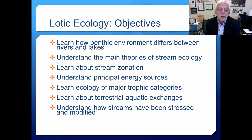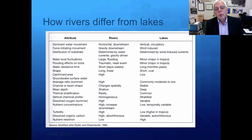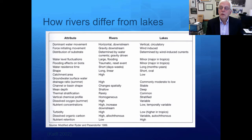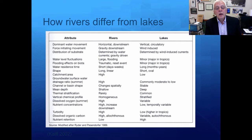Think about terrestrial-aquatic exchanges and understand how streams have been stressed and modified over time. Rivers differ from lakes in very important ways. This is a table from the KALF textbook. In rivers, flow is horizontal and downstream; in lakes, water movement is vertical and circulatory. In lakes, the force that initiates movement is wind; in streams it is gravity and downstream flow.